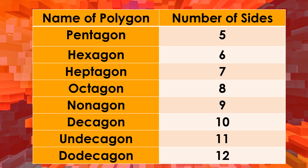So we have names of polygons and number of sides. We have a polygon with five sides — from the word penta means five. Hexagon means six. Heptagon means seven. Octagon means eight. Nonagon means nine. Decagon means ten. And the eleven-sided polygon means eleven. And dodecagon means twelve.